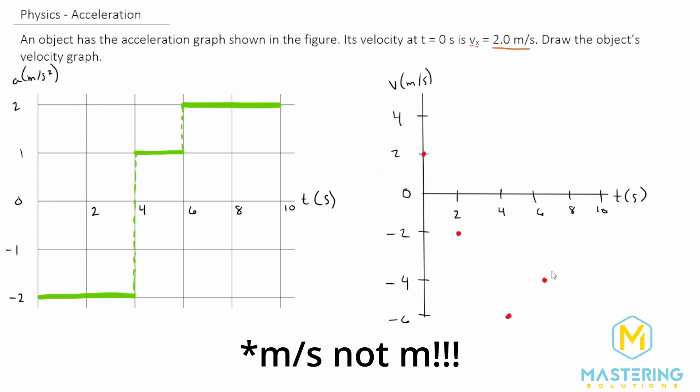And then same thing, we have another positive 4, so from 8 to 10 we go up to positive 4 right there.